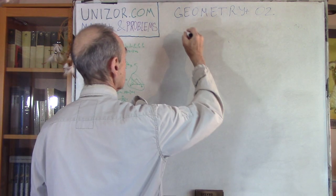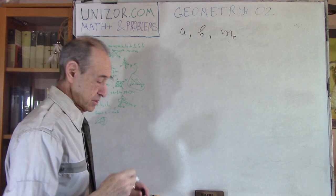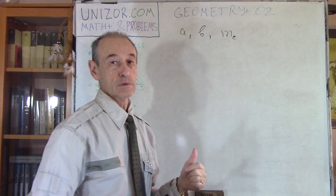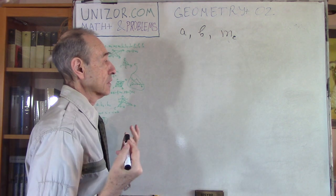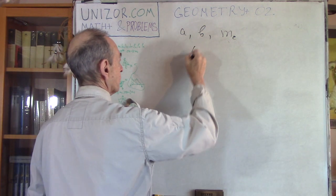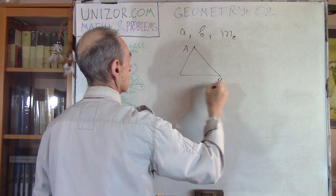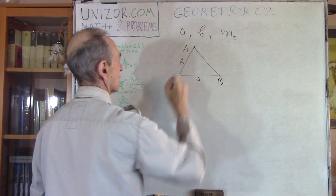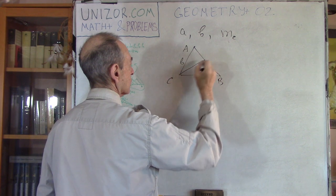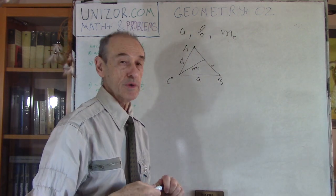My first problem is: you have side a, side b, and the median MC to the third side. These are three elements of a triangle which are given — two sides and a median to the third side. You have to construct the triangle knowing these three elements. Let's first draw the triangle and call it A, B, and C. We have sides a and b given, and the median MC to side c.